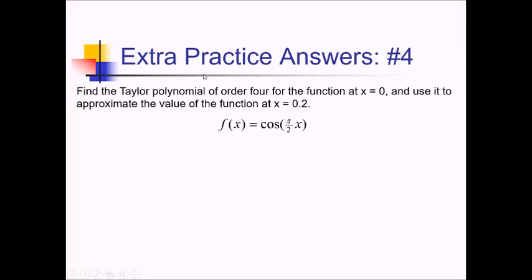For this problem, they want a fourth-order Taylor polynomial at 0, so a Maclaurin series for this function, and then approximate f of 0.2 using that. Let's start with the Maclaurin series for just cosine of x: that's 1 minus x squared over 2 factorial plus x to the fourth over 4 factorial. I'll stop there since they want a fourth-order polynomial.